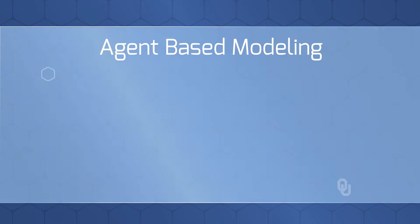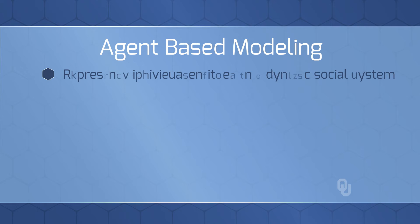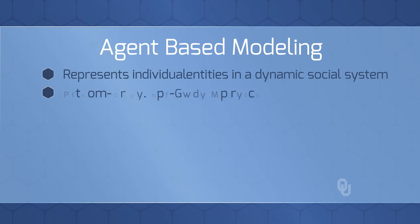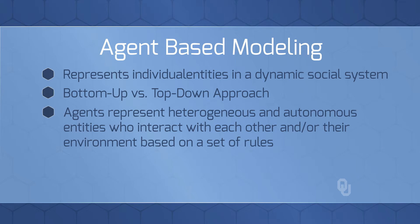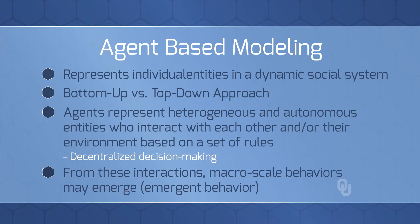An agent-based model is a computer simulation that represents individual entities in a dynamic social system. It takes a bottom-up versus a top-down approach. Agents represent heterogeneous and autonomous entities who interact with each other and their environment based on a set of rules — that is, the decision-making is decentralized. From these interactions, macro-scale behaviors may emerge. This is called emergent behavior.